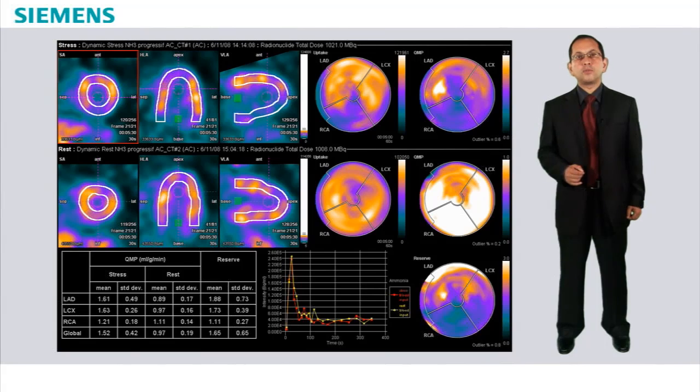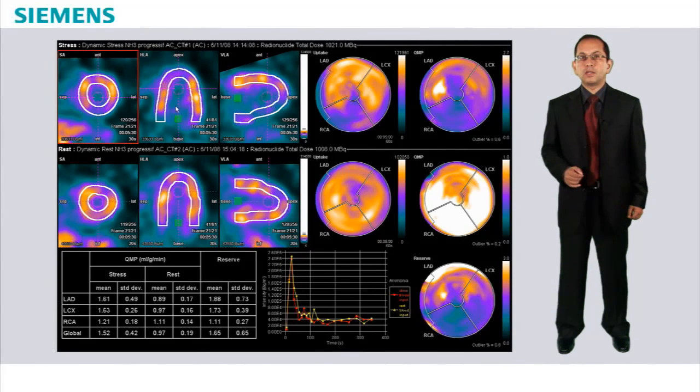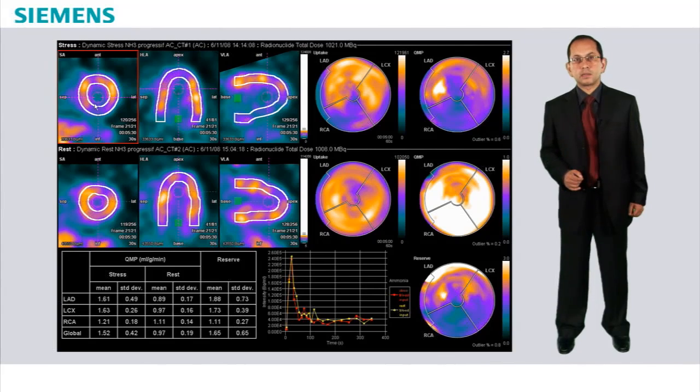Myocardial blood flow quantification is shown here in a patient with suspected coronary artery disease. Here we see the display of the dynamic perfusion study with the short axis view, the horizontal long axis view, and the vertical long axis, both at stress and at rest. There is an inferior wall perfusion defect at stress which shows improvement in uptake in the resting study.